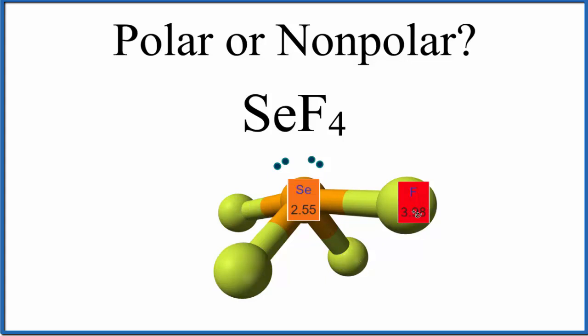And since we have all of the fluorines on one side, we have them down here and then off to the side, that means that this side of the molecule is going to be more negative. Up here, it'll be more positive. We have a positive and a negative side. That means SeF4 is a polar molecule.